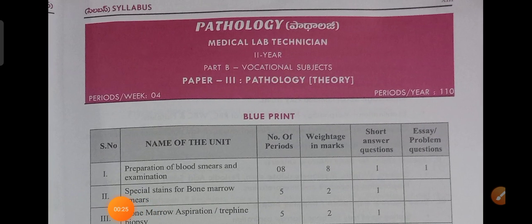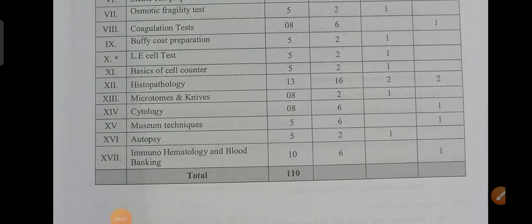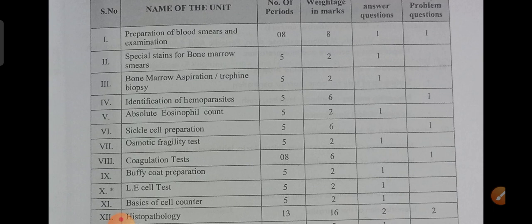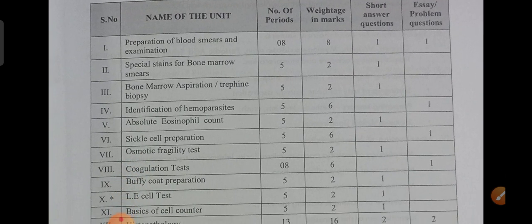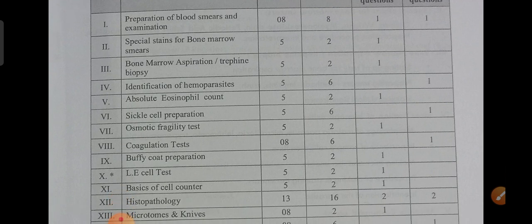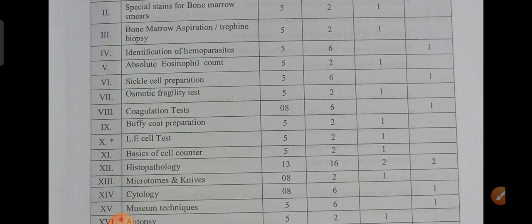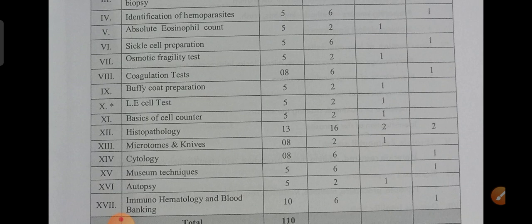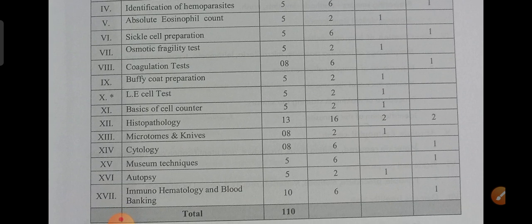This pathology consists of overall 17 units. These are the units one by one, please go through once: preparation of blood smear examination, special strains for bone marrow smears, bone marrow aspiration, trephine biopsy, identification of hemoparasites, absolute eosinophil count, sickle cell preparation, osmotic fragility test, coagulation test, buffy coat preparation, LE cell test, basics of cell counter, histopathology, microtomes and knives, cytology, museum techniques, autopsies.